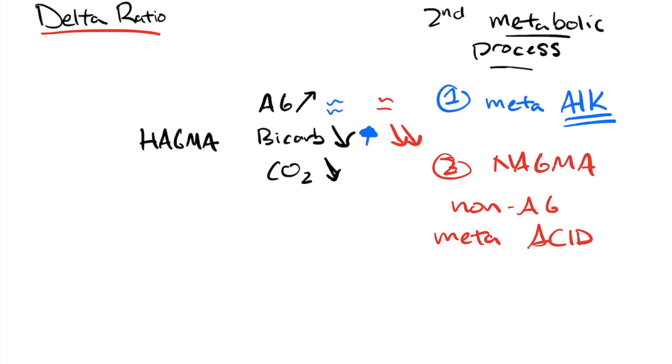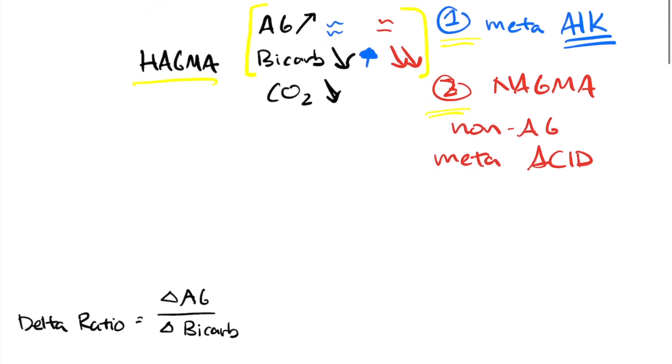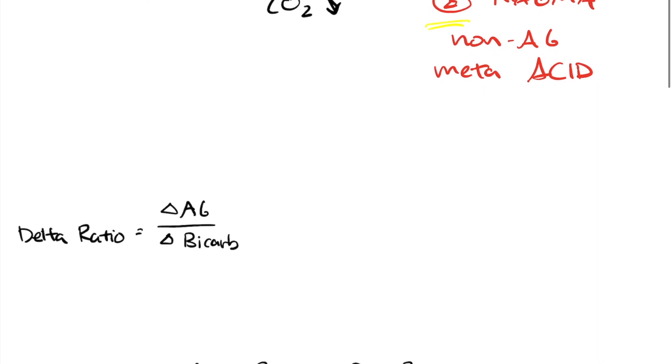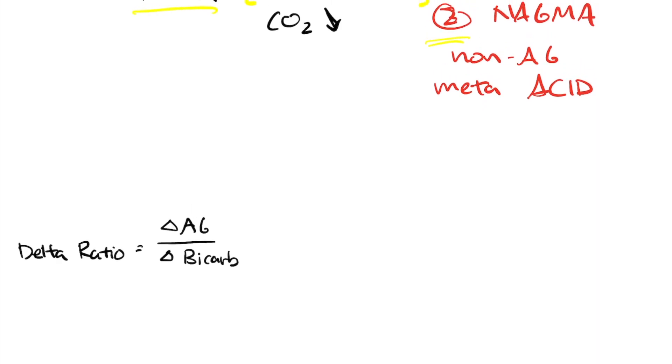So what the delta ratio tries to calculate is effectively, if I can know the ratio of just the anion gap and the bicarb, I should be able to tell, is it just a HACMA? Or, if there's one of these things involved as well. So, let's talk about the actual formula itself. It's pretty simple.